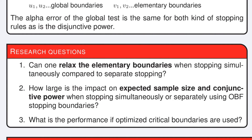First, can one relax the elementary boundaries when stopping simultaneously compared to separate stopping? Second, how large is the impact on expected sample size and power when stopping simultaneously or separately? Last, what is the performance if optimized critical boundaries are used?